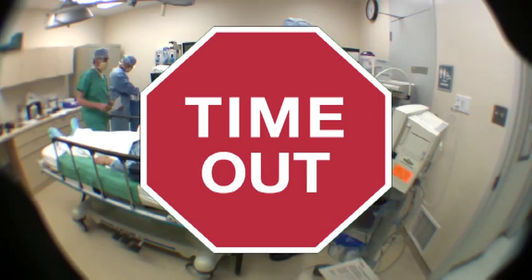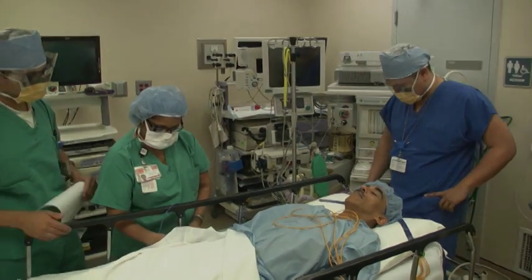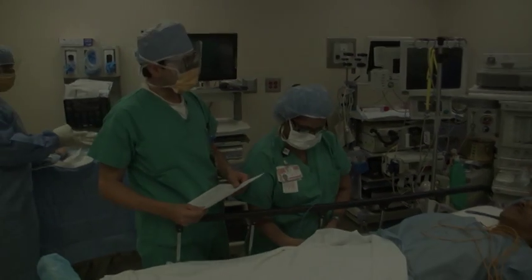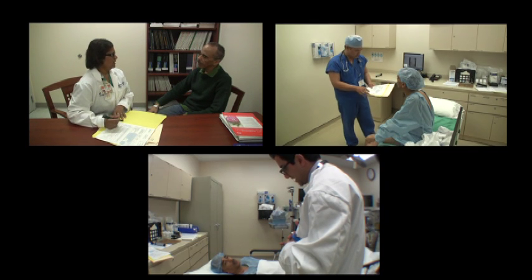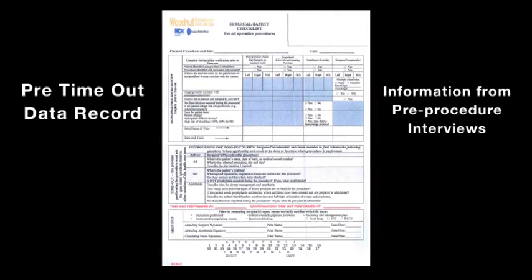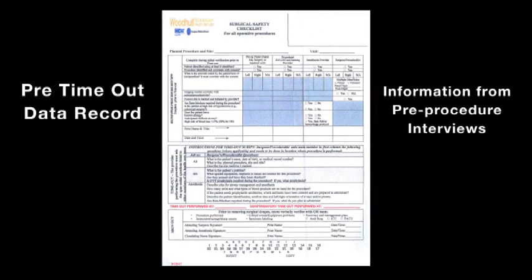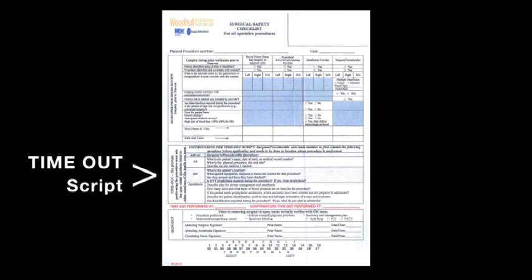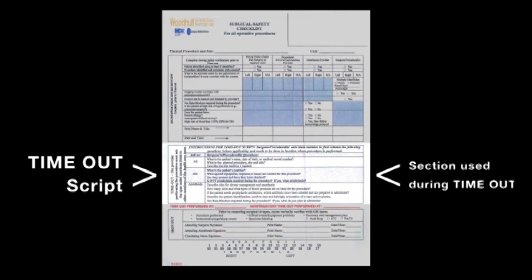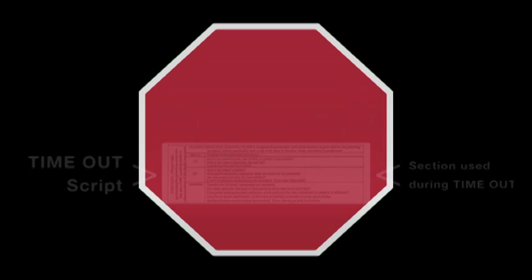All activity in the operating room comes to a stop before the first incision. The surgeon, demanding everyone's undivided attention, announces the timeout is about to begin. All team members participate in the timeout and share information collected during their pre-procedure interviews with the patient. You will see our nurse, anesthesiologist, and surgeon interviewing patient Mr. Peter Simpson, verifying his identity and that he is about to undergo knee replacement surgery on his right knee. Together, during the timeout, they confirm the correct patient is having the correct procedure on the correct site.